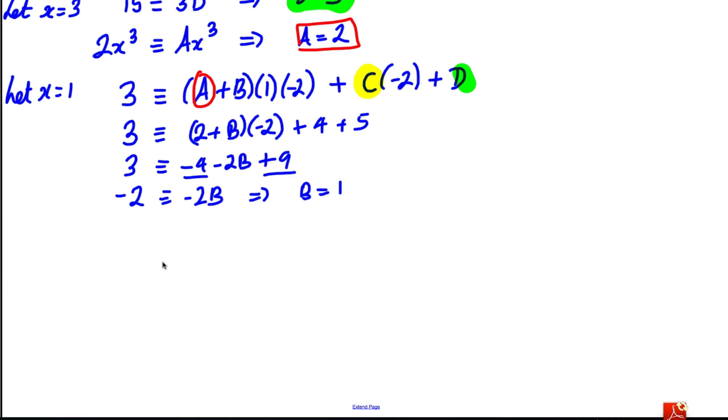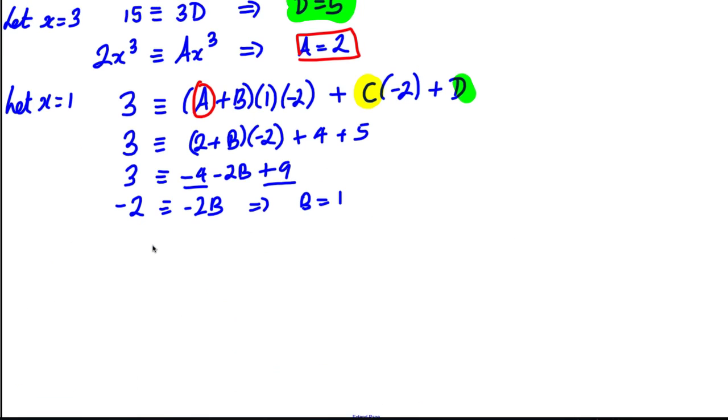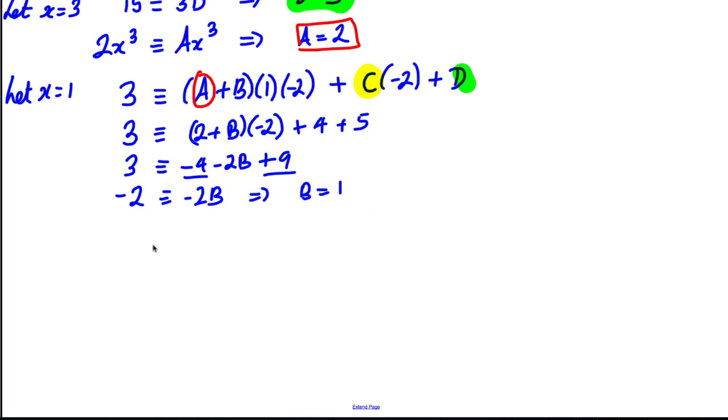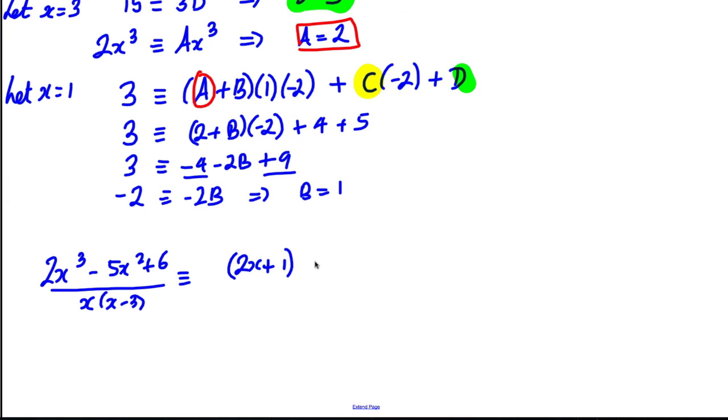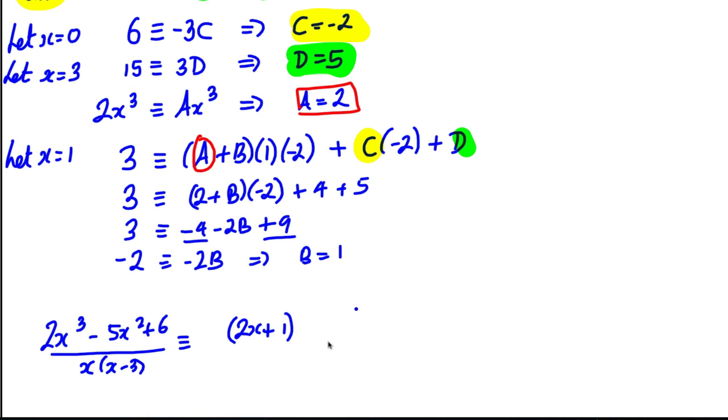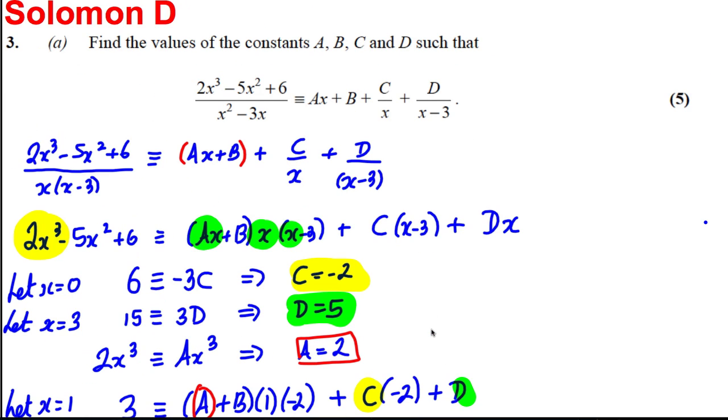So writing our answer then, 2x³ - 5x² + 6 all over x(x - 3) is therefore going to be equal to 2x + 1 plus C over x, so it's going to be -2 over x and then we're going to have plus D over x - 3, which is 5 over x - 3. So that's the first part done there for 5 marks.